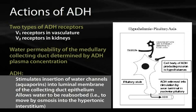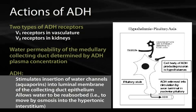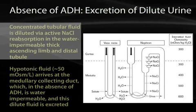ADH is released from the pituitary gland. Increases in plasma osmolality are sensed by the hypothalamus, which stimulates the pituitary gland to release ADH. ADH is released into the circulation, which both stimulates thirst — increasing water intake to combat increased osmolality — and acts in the kidney to increase water reabsorption, leading to a fall in plasma osmolality.